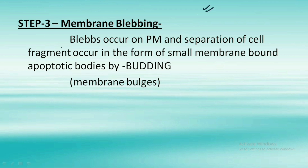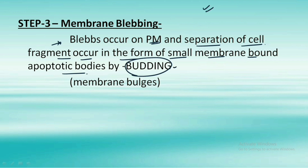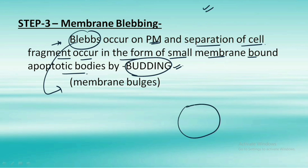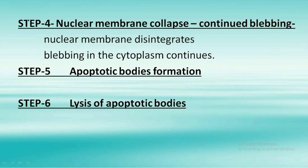Step three is membrane blebbing. Blebs start to occur on the plasma membrane and separation of cell fragments occurs in the form of small membrane-bound apoptotic bodies, which forms by budding. Blebs are nothing but membrane bulges — small outward protrusions on the cell surface. This is membrane blebbing.